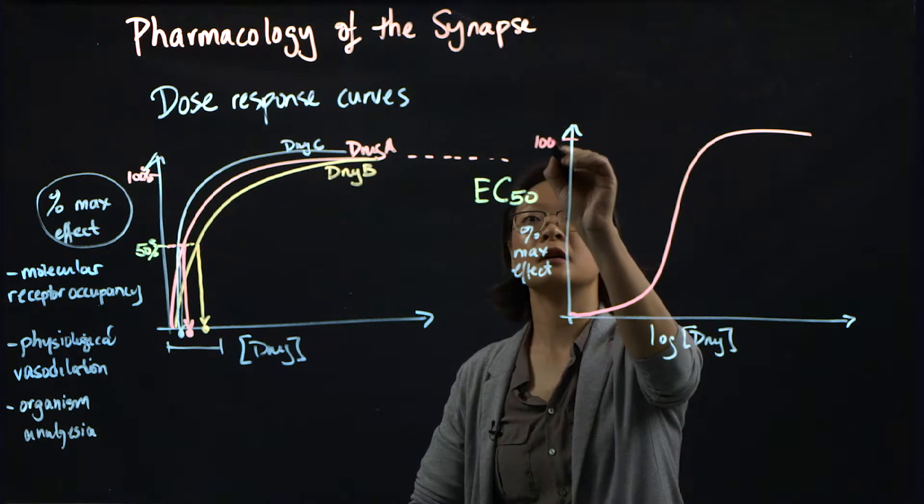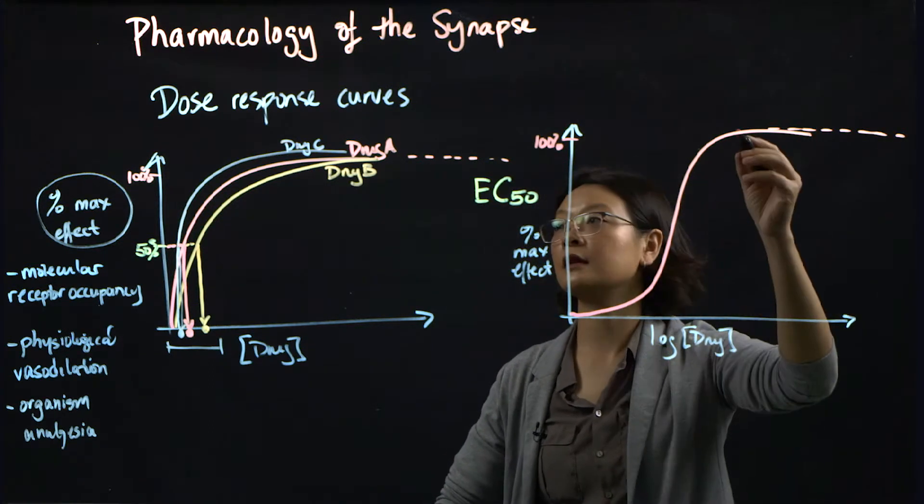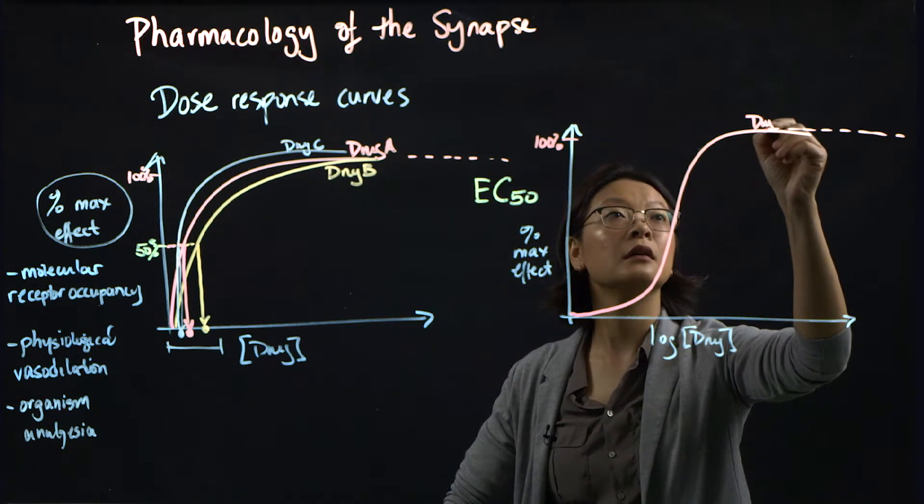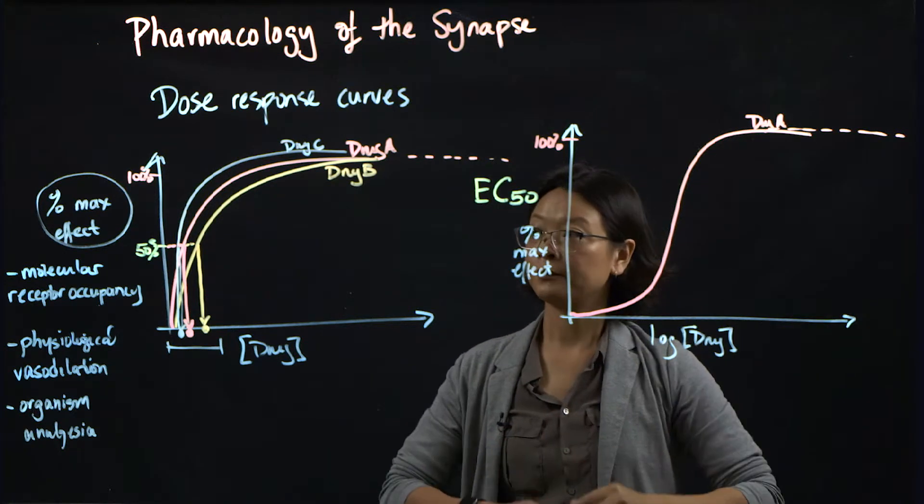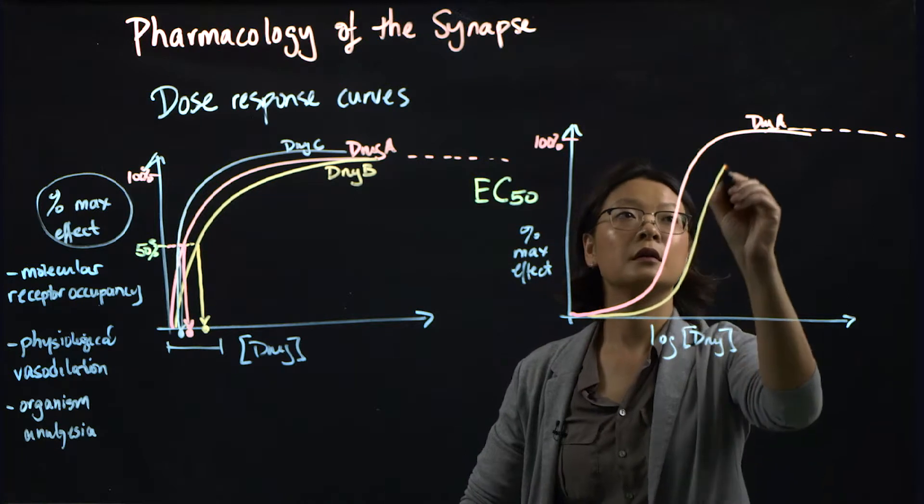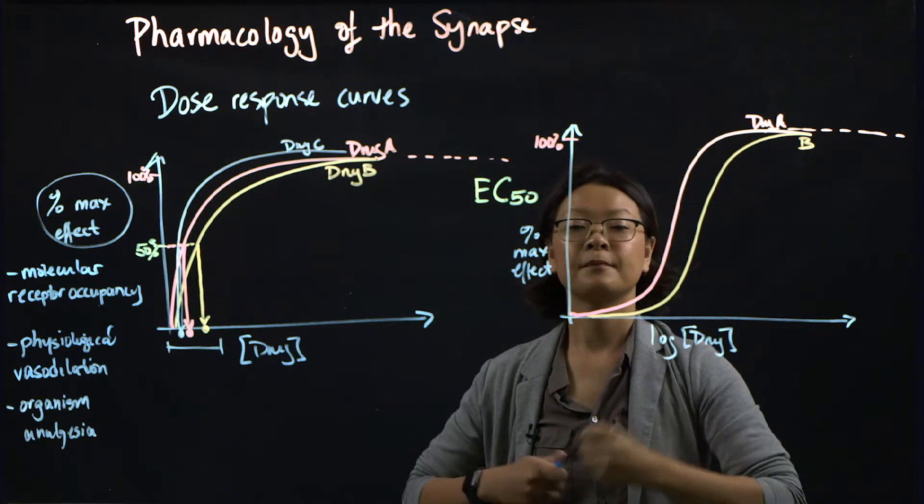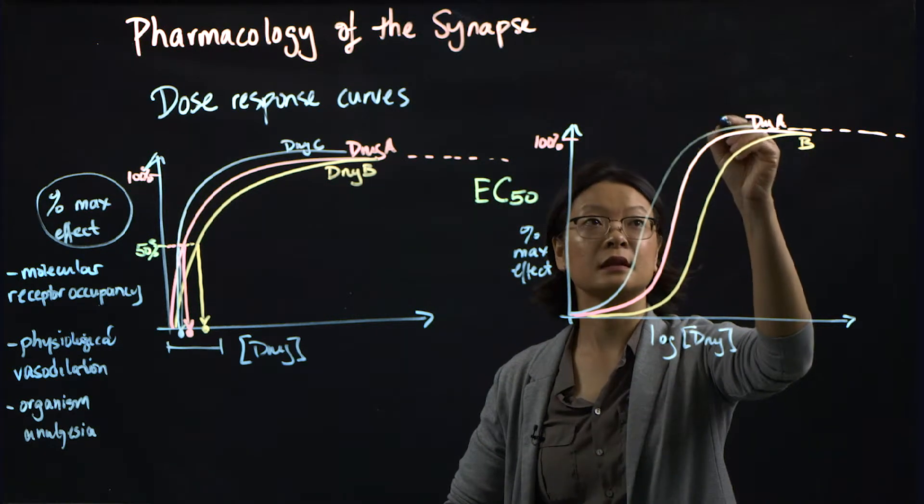The hyperbolic curves will turn into sigmoidal curves. Again, we approach 100 percent max effect, still approach an asymptote, and this is drug A, drug B, and drug C.